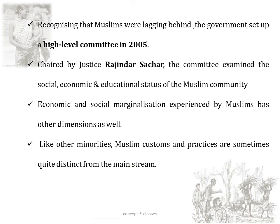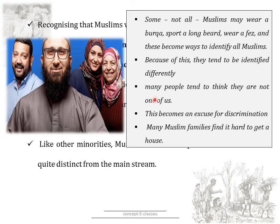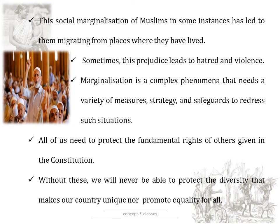Economic and social marginalization experienced by Muslims had other dimensions as well. Like other minorities, Muslim customs and practices were sometimes quite different from the mainstream. For example, some Muslims — not all — may wear a burqa, sport a long beard, or wear a fez. These became ways to identify all Muslims, causing them to be identified differently. Many people tend to think they are 'not one of us,' which became an excuse for discrimination. Many Muslim families find it hard to even get a house because of this. This social marginalization sometimes led Muslims to migrate from places they lived. In some instances, this prejudice even led to hatred and violence.